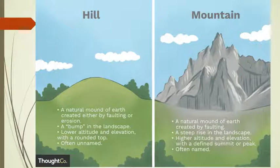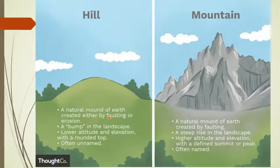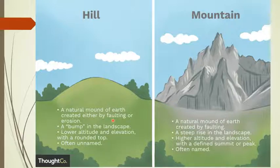On your left side you can see the properties of hills; on the right side you can see the properties of mountains. Properties of hills: a natural mound of earth created either by faulting or erosion. Faulting is directly associated with the motion of plate tectonics, and erosion is associated with the degradation of any physical feature by external forces like force of water, force of wind, or other external forces.